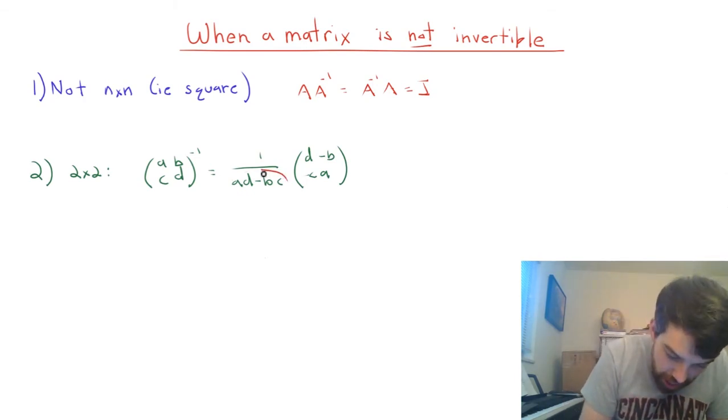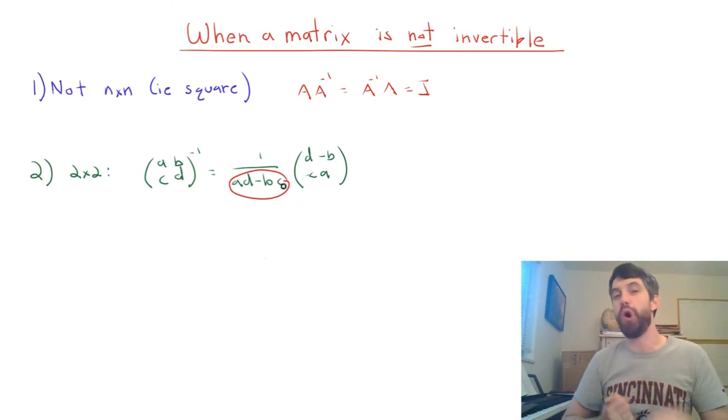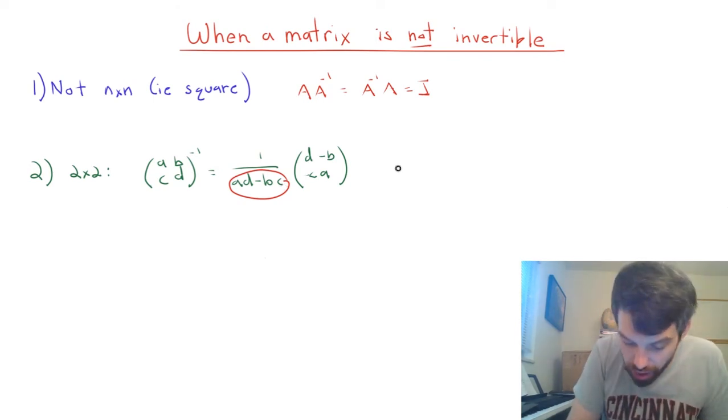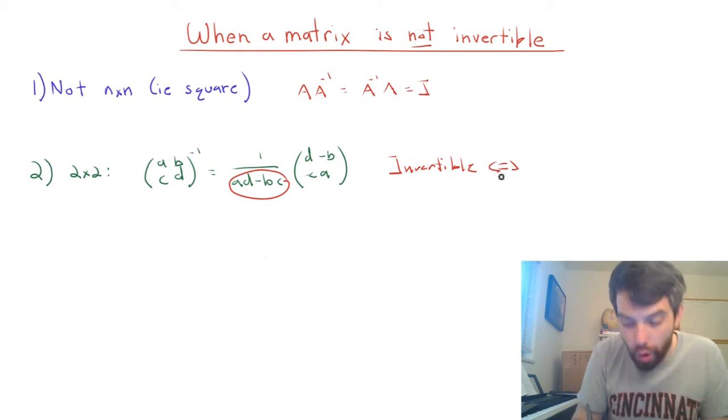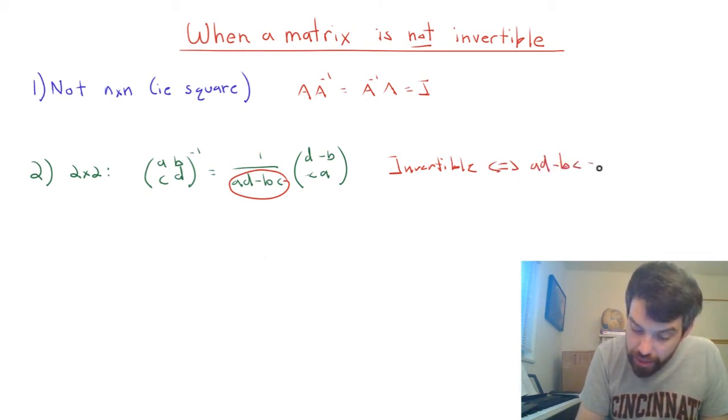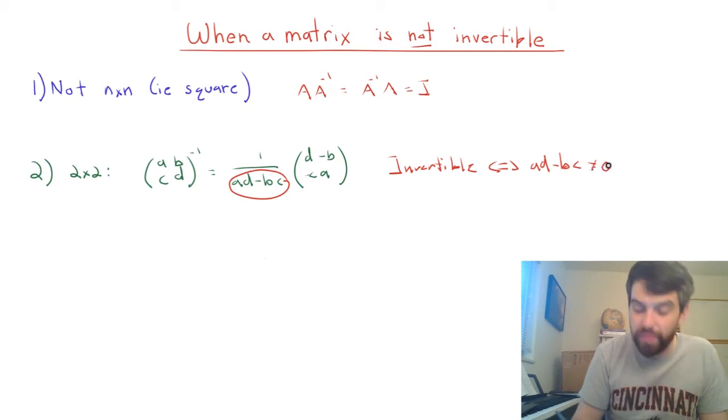because of the AD minus BC on the bottom here, your formula might not always work. It might be due to a division by zero problem. And indeed, we're going to get that invertibility is going to be equivalent, as in it's an if and only if, the AD minus BC is not going to be equal to zero.